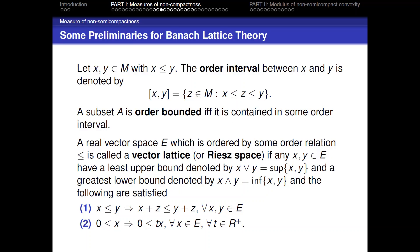A real vector space E ordered by some relation is called a vector lattice, or Riesz space, if any x, y have a supremum and infimum and satisfy: first, if x ≤ y then x + z ≤ y + z; and second, if x is positive, then for all positive scalar t, tx is also positive.